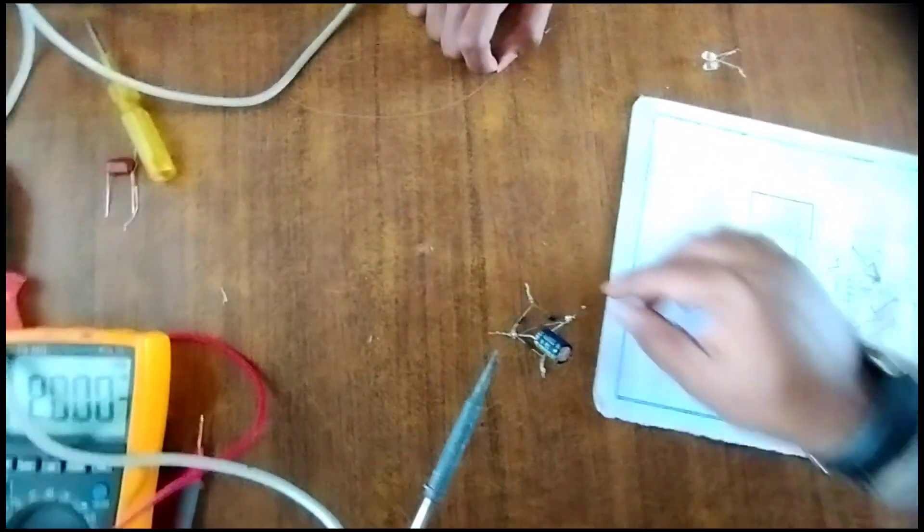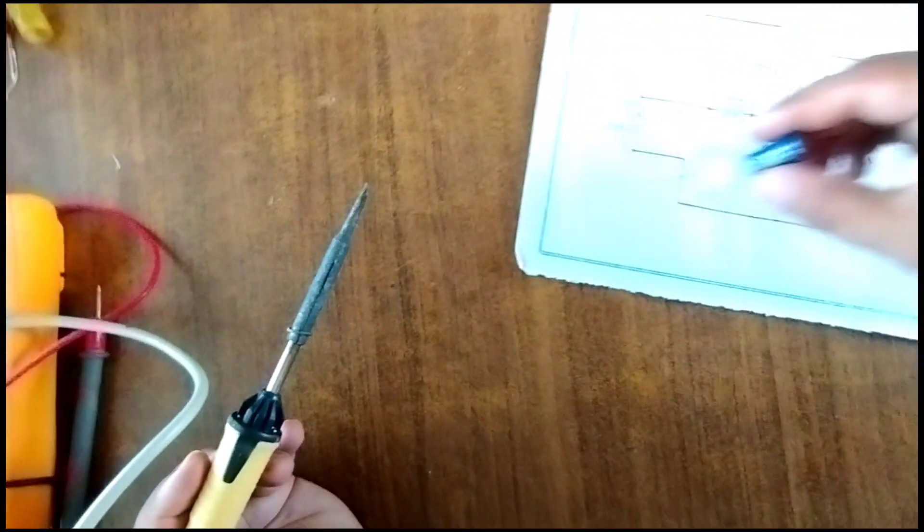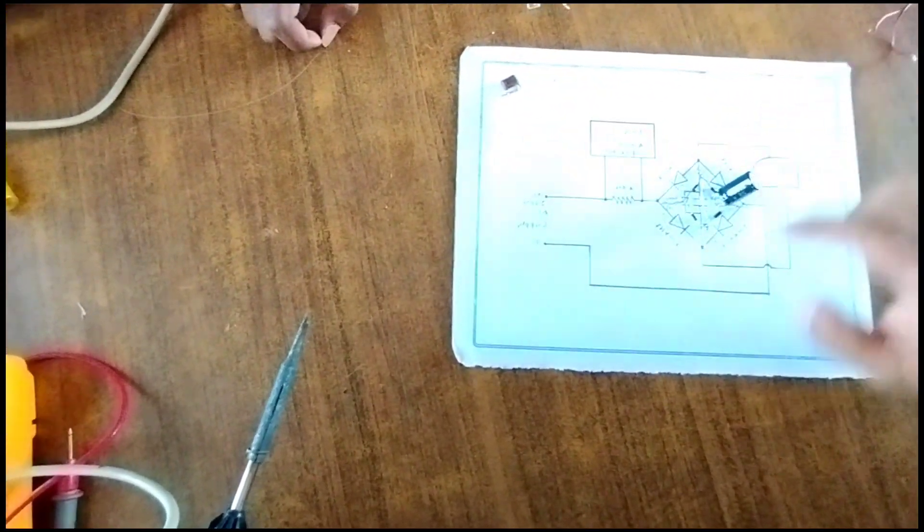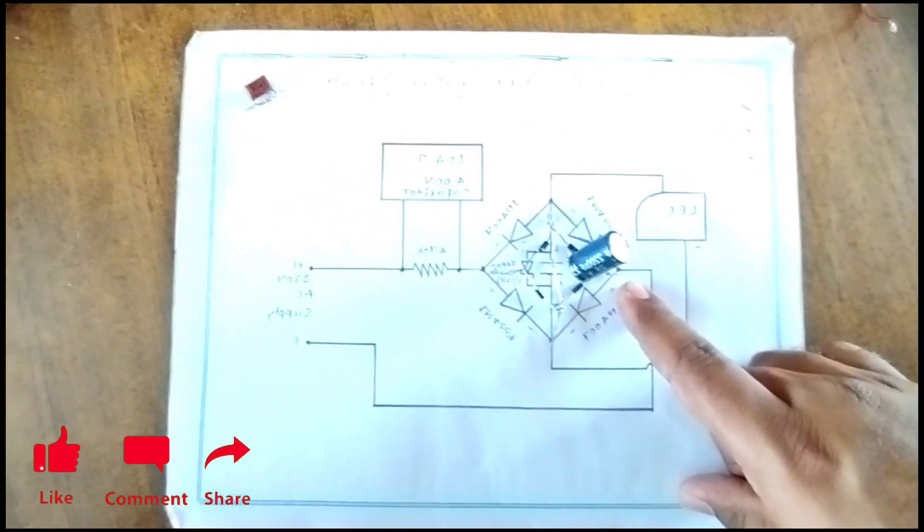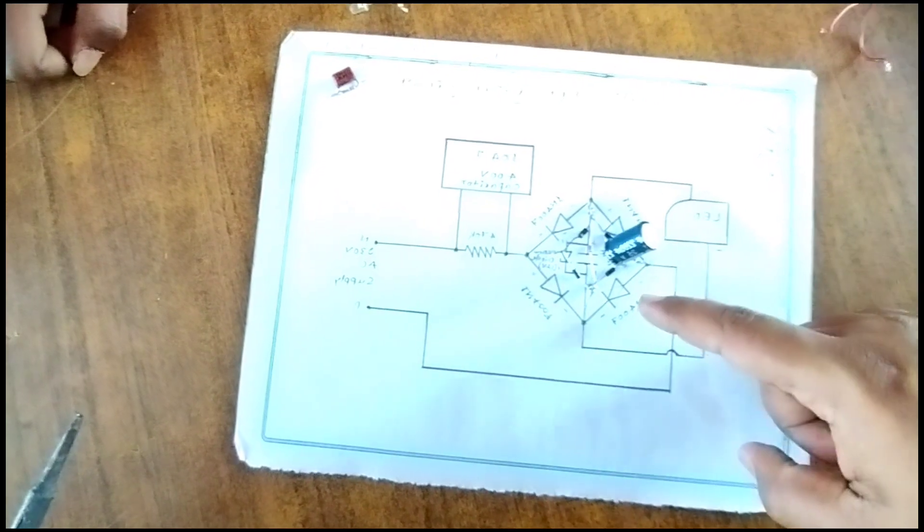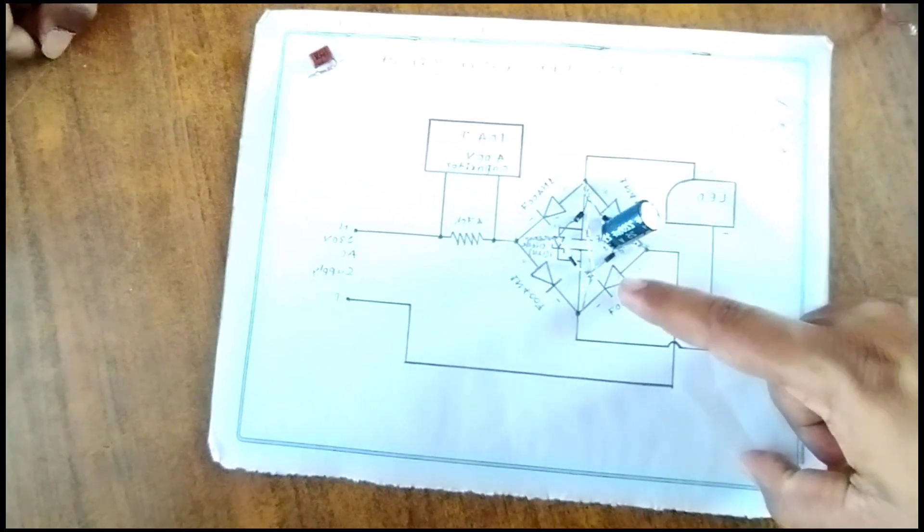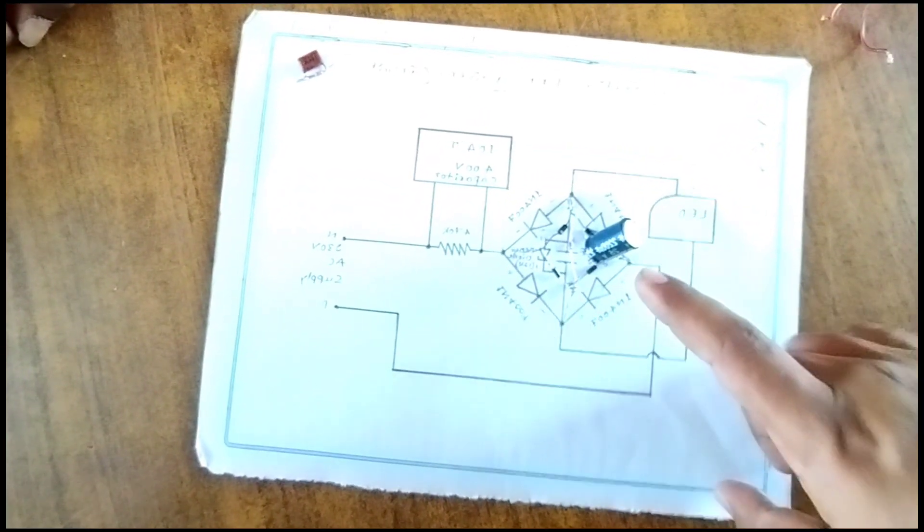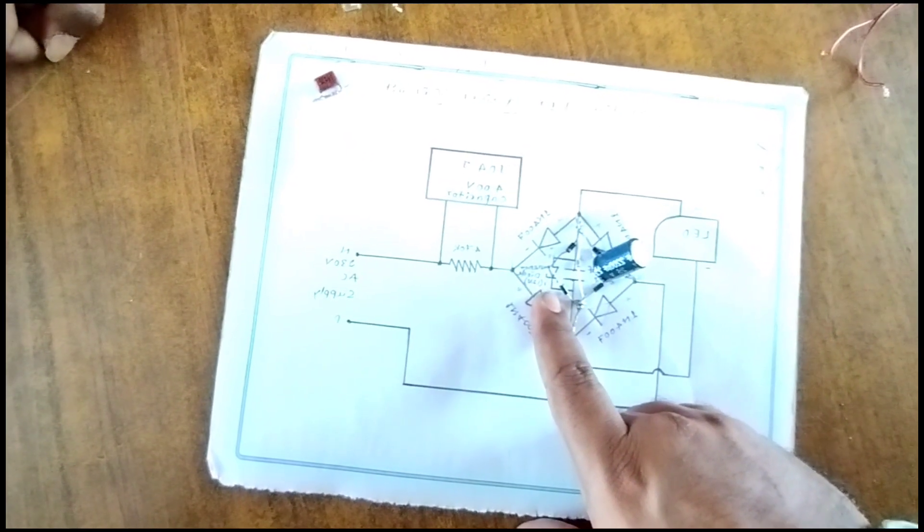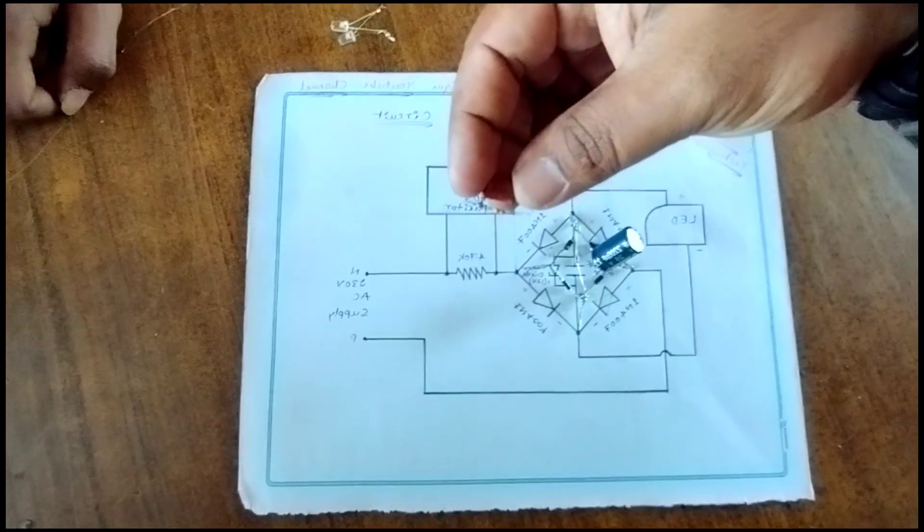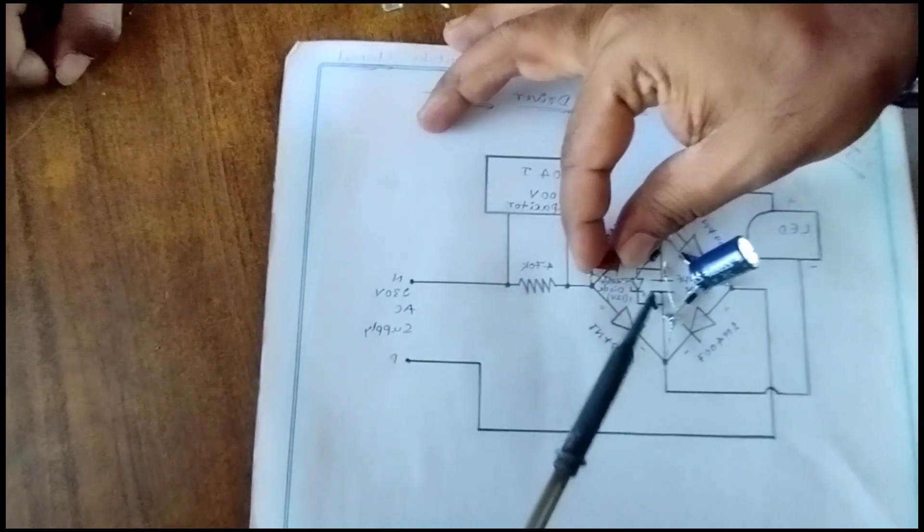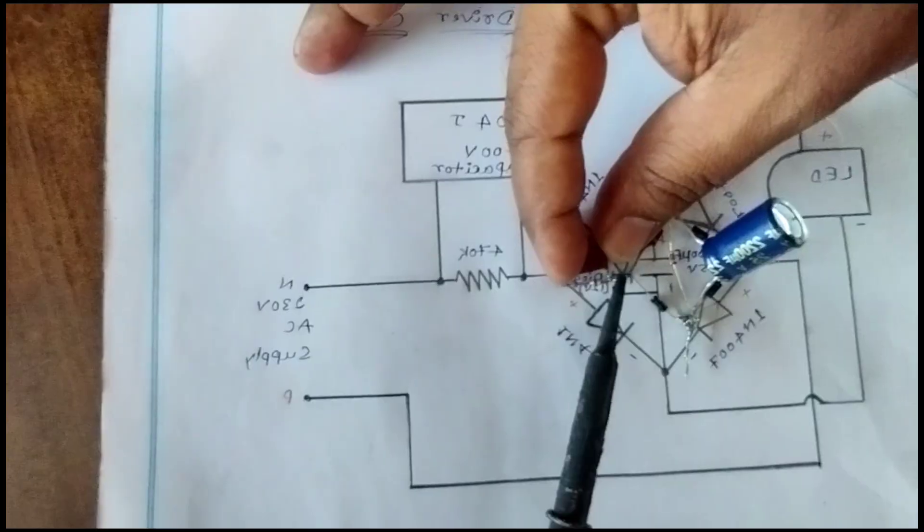This is the bridge rectifier connection. You can see here this is the connection. Next we give supply positive point to this anode and cathode point, and another anode cathode point is given to this arrangement, capacitor and resistor. You can see here you connect this.